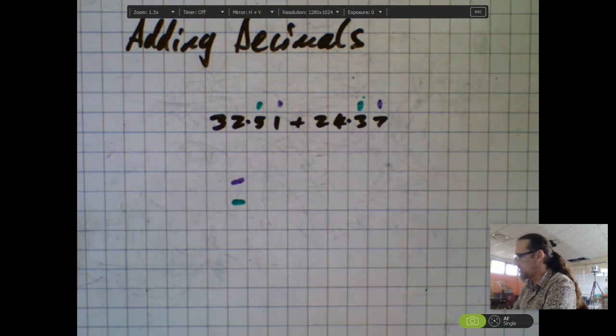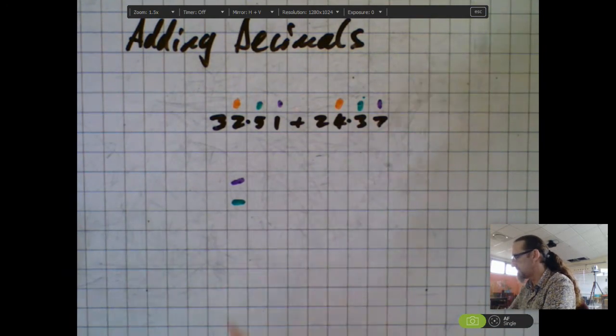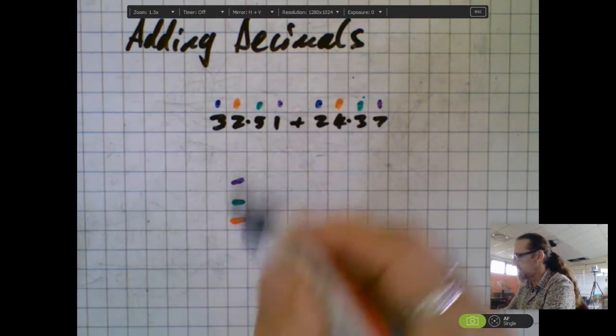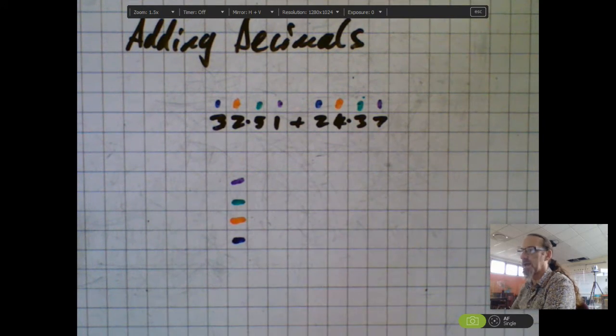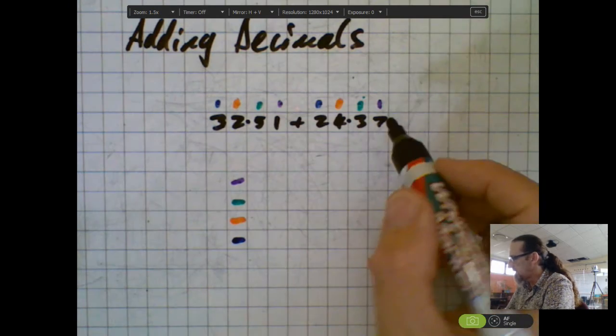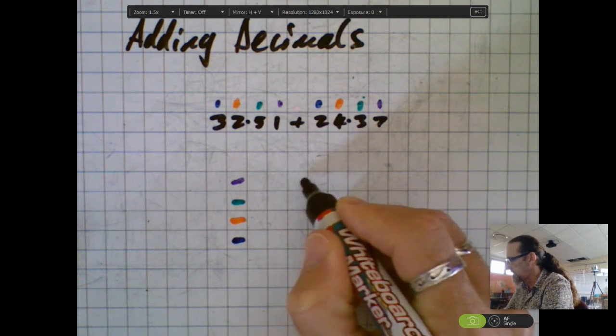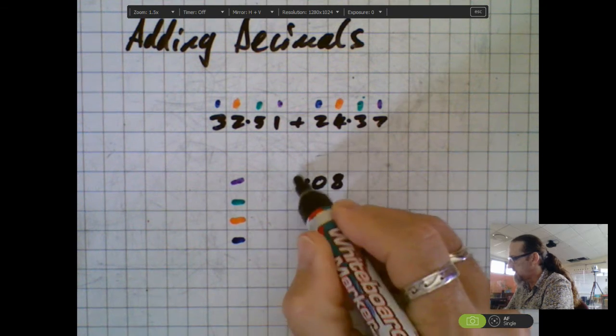And over here I've got four ones which correlates with two ones in this number, and finally I got two tens and three tens in these numbers. So now I just need to make sure that I add them all up correctly. So I've got the seven hundredths with one hundredth which leaves me with eight hundredths.